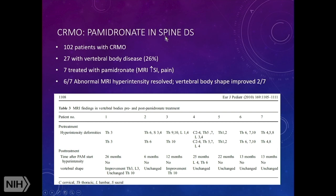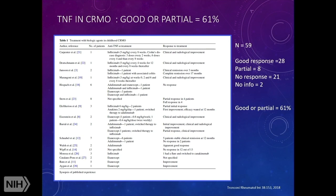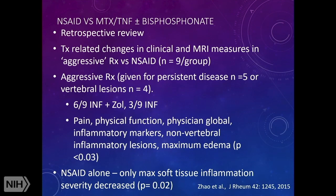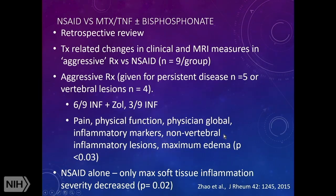TNF inhibitors and bisphosphonates appear to be the best second-line therapies. For spine disease, most experts prefer bisphosphonates over TNF inhibitors to preserve vertebral height and prevent vertebral body collapse. One study compared NSAIDs alone versus aggressive treatment with methotrexate plus a TNF inhibitor and bisphosphonate for persistent disease or vertebral lesions — markers of pain, physical function, physician global assessment, inflammatory markers, and MRI edema all statistically improved with aggressive treatment, while NSAIDs alone showed improvement only in soft tissue inflammation.